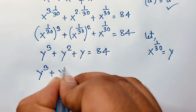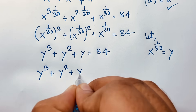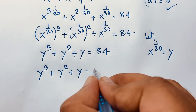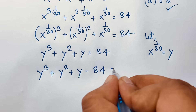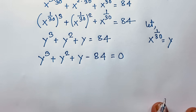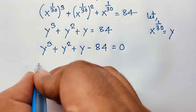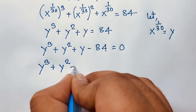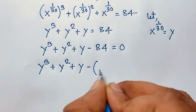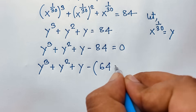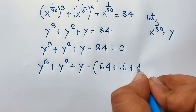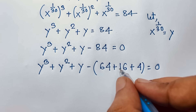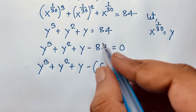Now we have the cubic equation y cubed plus y squared plus y minus 84 equals 0. We notice that 84 can be decomposed as 64 plus 16 plus 4, which equals 84. So we rewrite the equation as y cubed plus y squared plus y minus 64 minus 16 minus 4 equals 0.